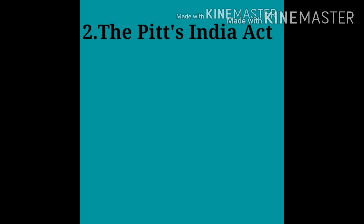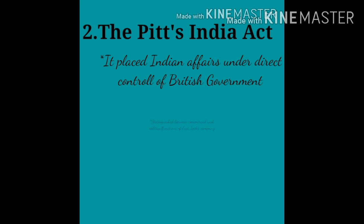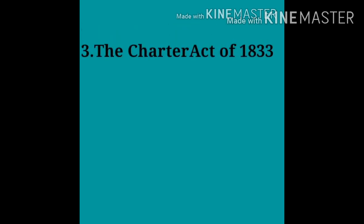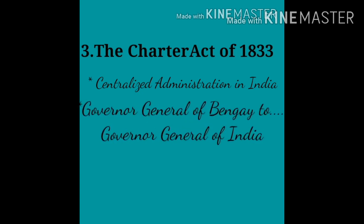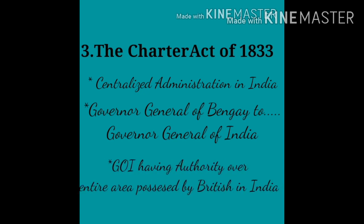The next important act was Pitt's India Act of 1784. It placed Indian affairs under the direct control of the British government, and distinguished between the commercial and political functions of the company. The Charter Act of 1833 was the final step towards centralized administration in India. It made the Governor General of Bengal the Governor General of India, creating for the first time a government of India with authority over the entire territorial area possessed by the British in India.